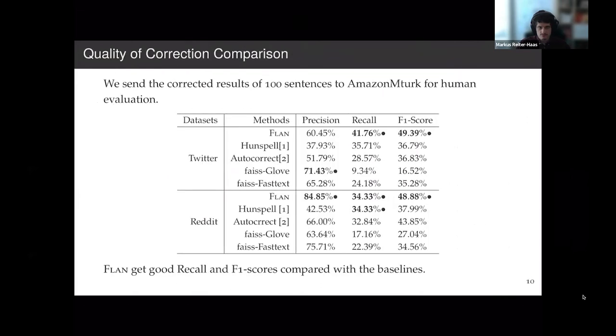And then another thing we care about is whether our algorithm can suggest high-quality corrections. We use the same input for each of the algorithms, and then we extract the output. We do a questionnaire and post it on Amazon Mechanical Turk. Those native speakers will evaluate if the current correction is good, bad, or not sure. We summarize the result and compute the precision, recall, and F1 score on top of it. What we can find is that our algorithm attained a good performance on recall and the overall metric F1 score.